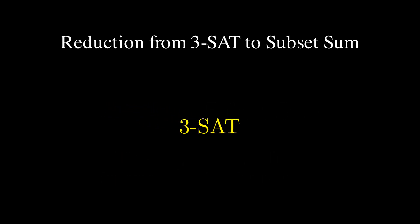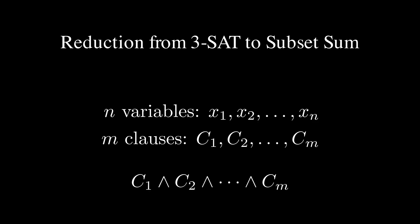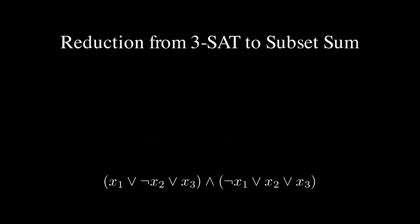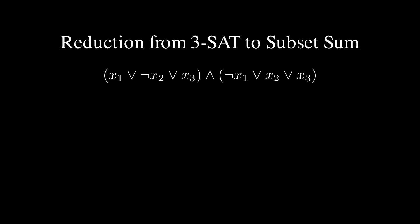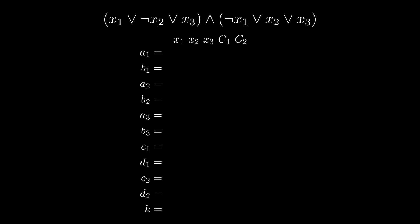An instance of the 3SAT problem consists of N variables and M clauses, where each clause consists of three literals. Recall that a literal is a variable or its negation. The input formula is the conjunction of the M clauses. Now, suppose we're given an arbitrary instance of the 3SAT problem. We want to construct an instance of the subset sum problem based on the input boolean formula.